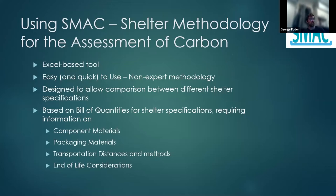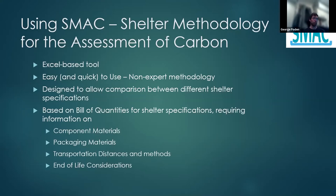To actually use SMACK itself, we wanted to create something that was easy and quick to use — a non-expert methodology. It's an Excel-based tool that you can just pick up and use. In order to use the tool you need very simple information that should be found on a bill of quantities for shelter specifications: information on the component materials, the packaging materials, and the transportation distances and methods. There are calculations done in the background that look at end-of-life considerations as well — that's everything you need for the tool's output.